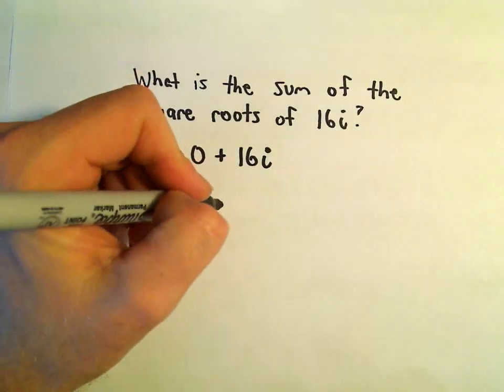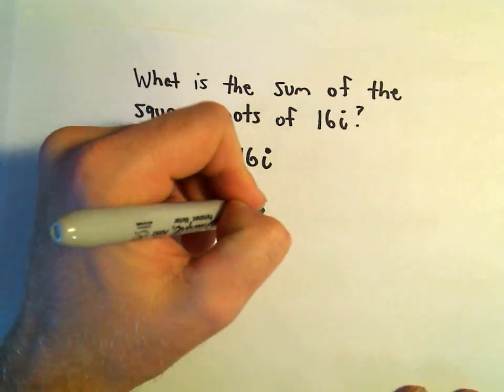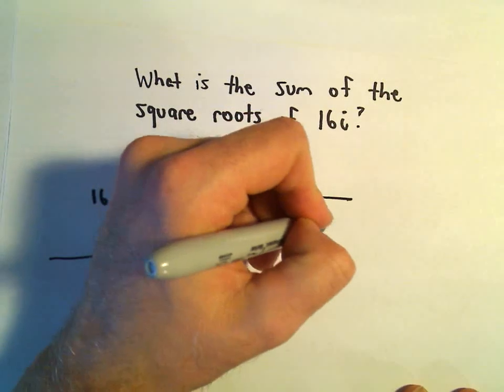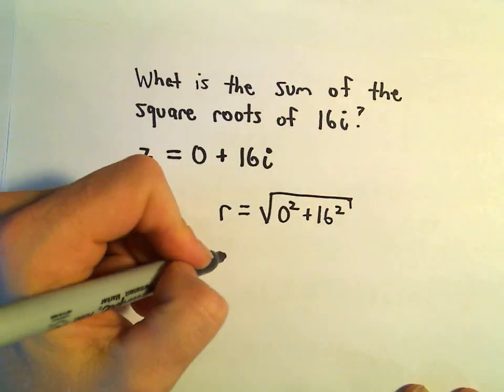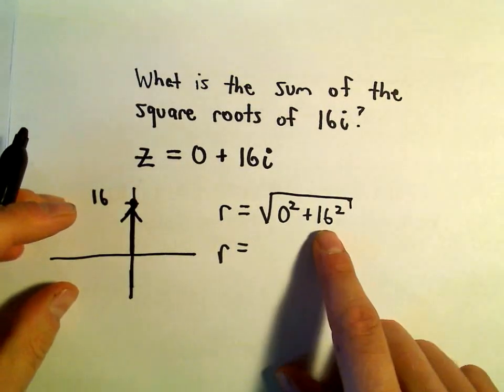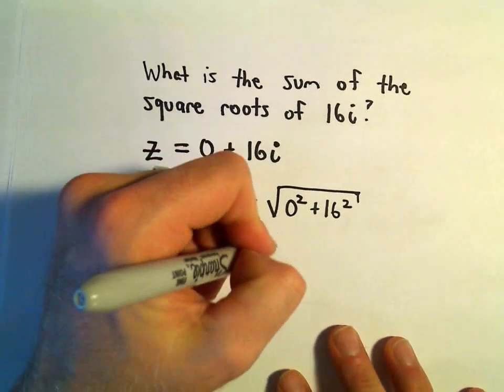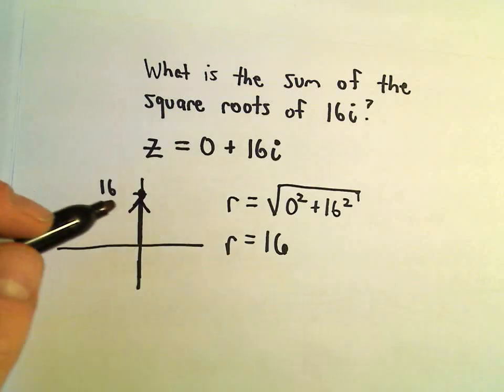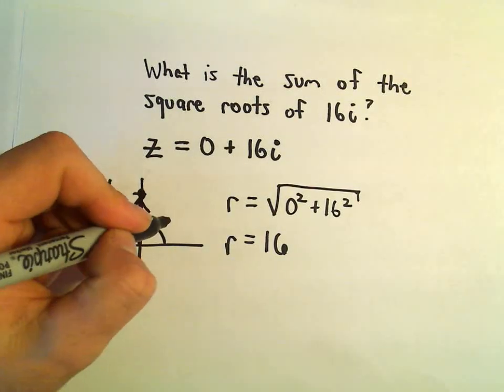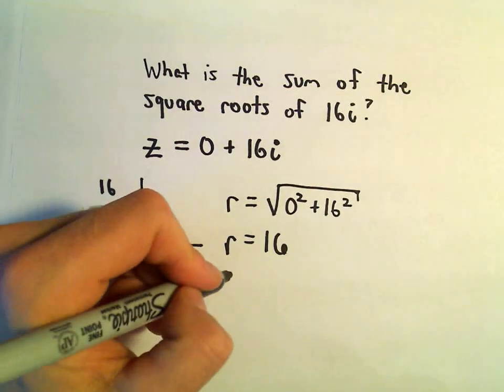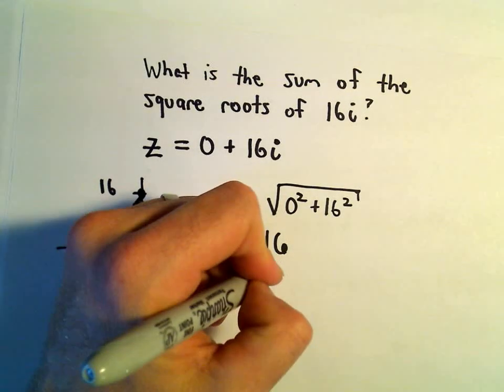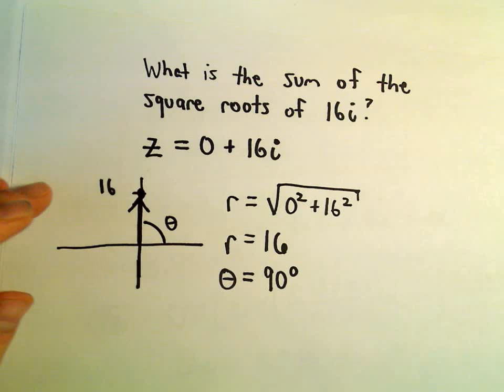So we'll have to do a couple things. We'll have to figure out the r value, but again the r value would just be 0 squared plus 16 squared. Well there's no point in multiplying out 16 squared because when we take the square root we'll just get 16 right back. We would also have to think about our angle here theta, but in this case I think it's pretty clear that theta would equal pi over 2 or 90 degrees.